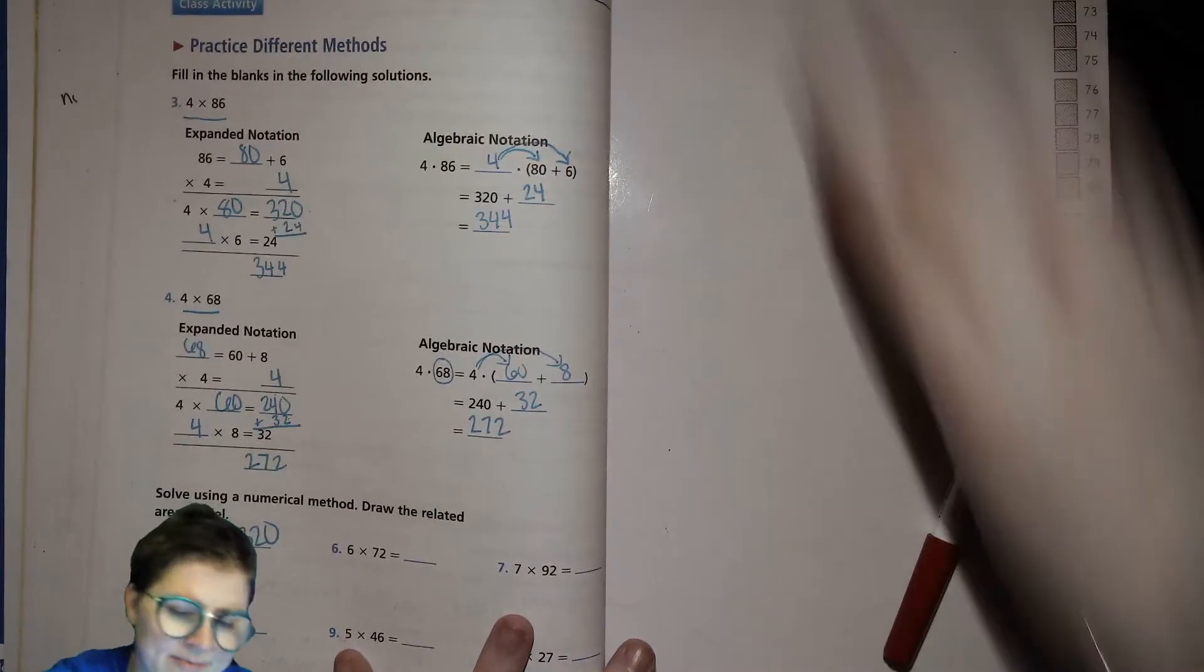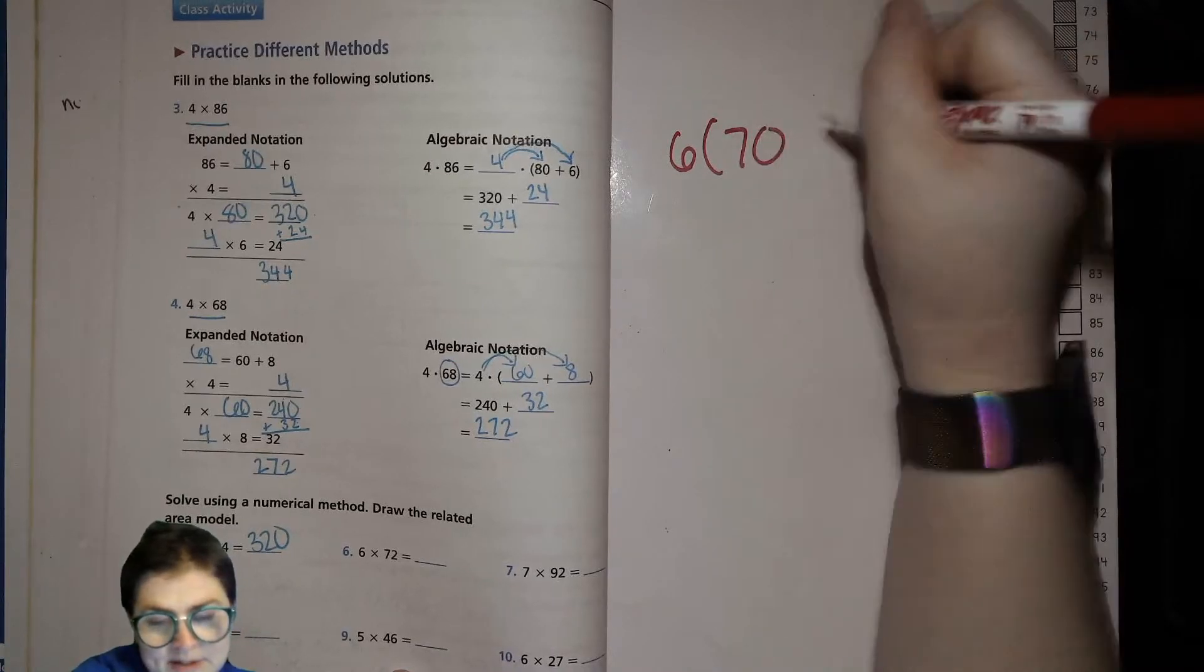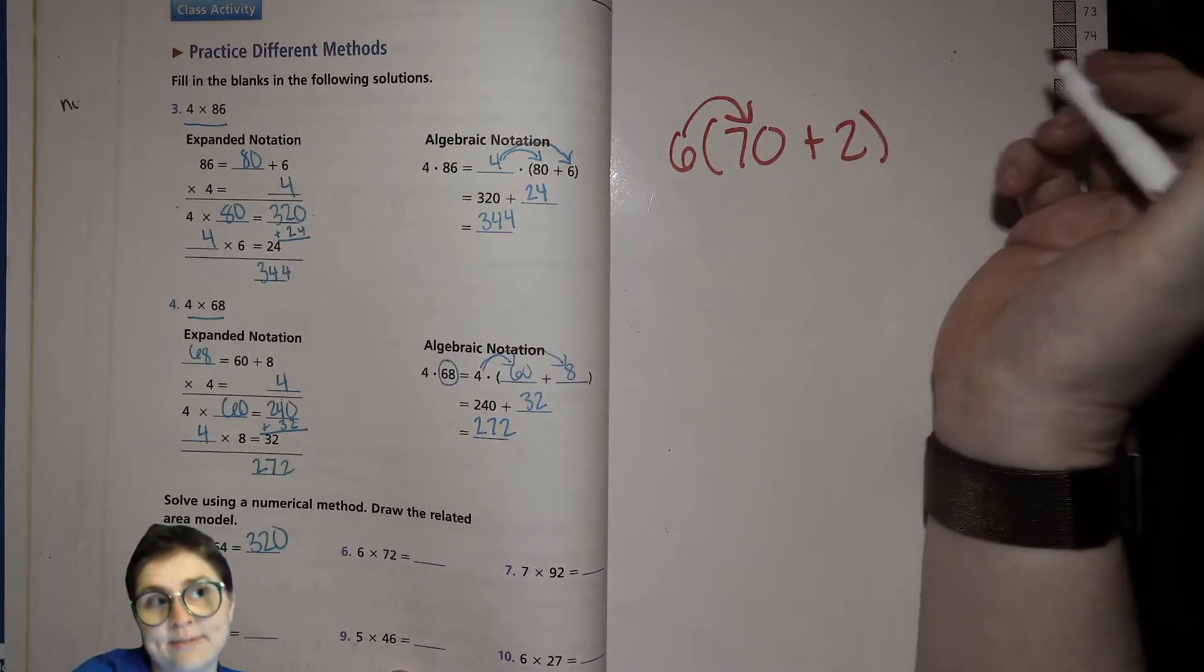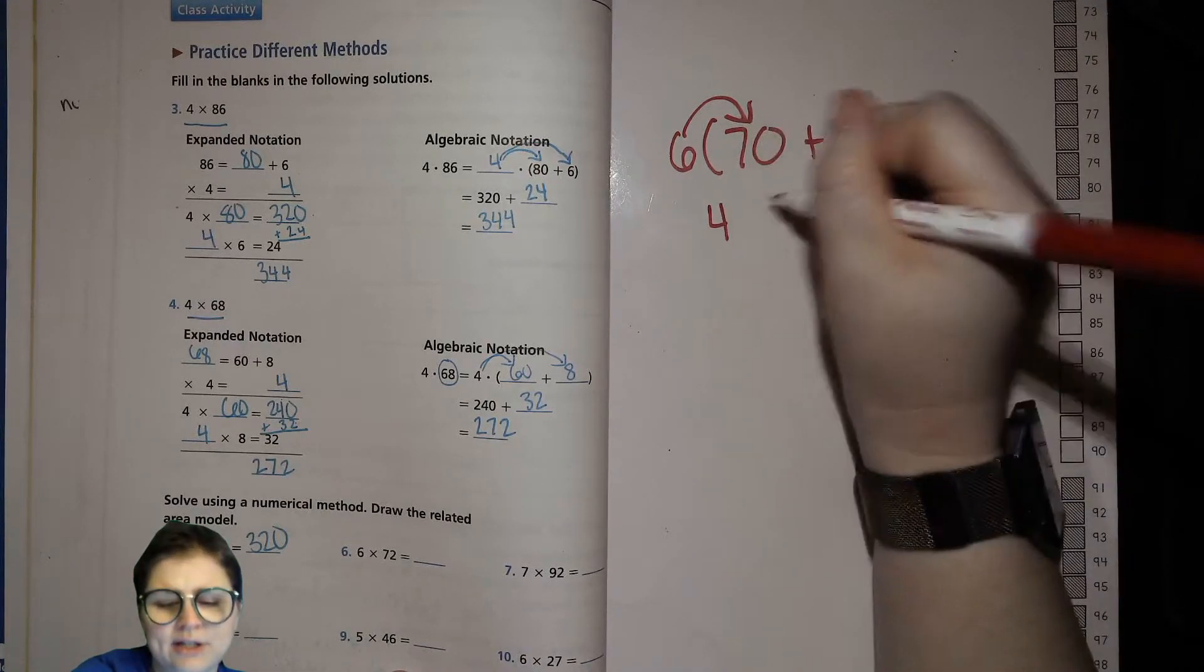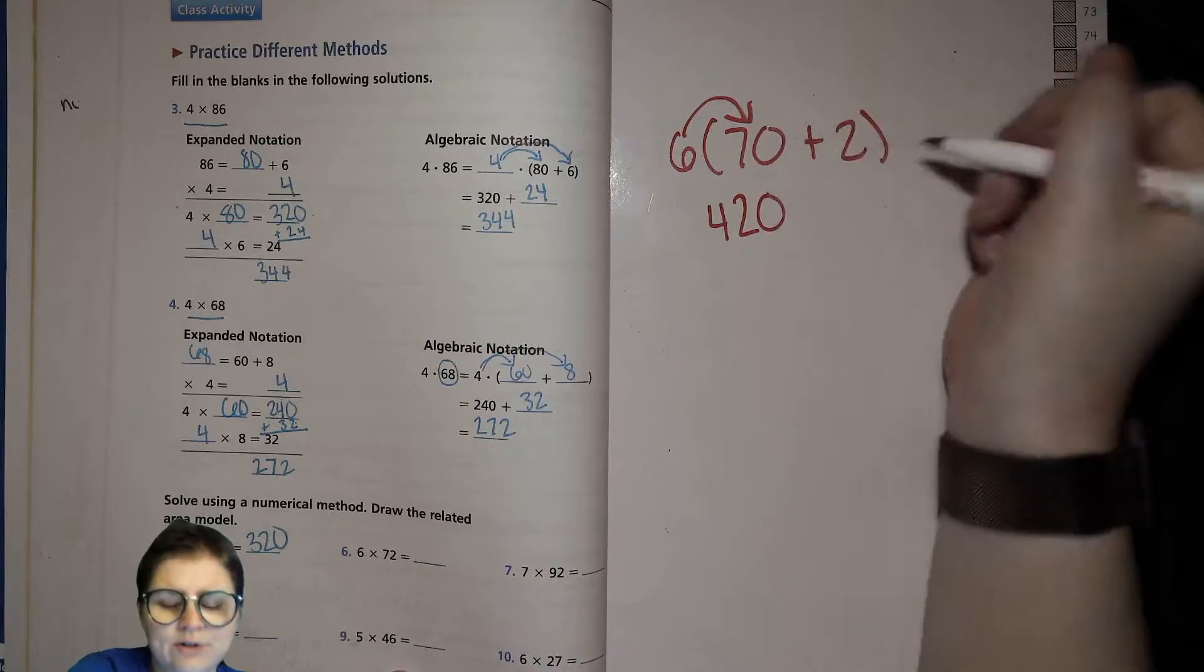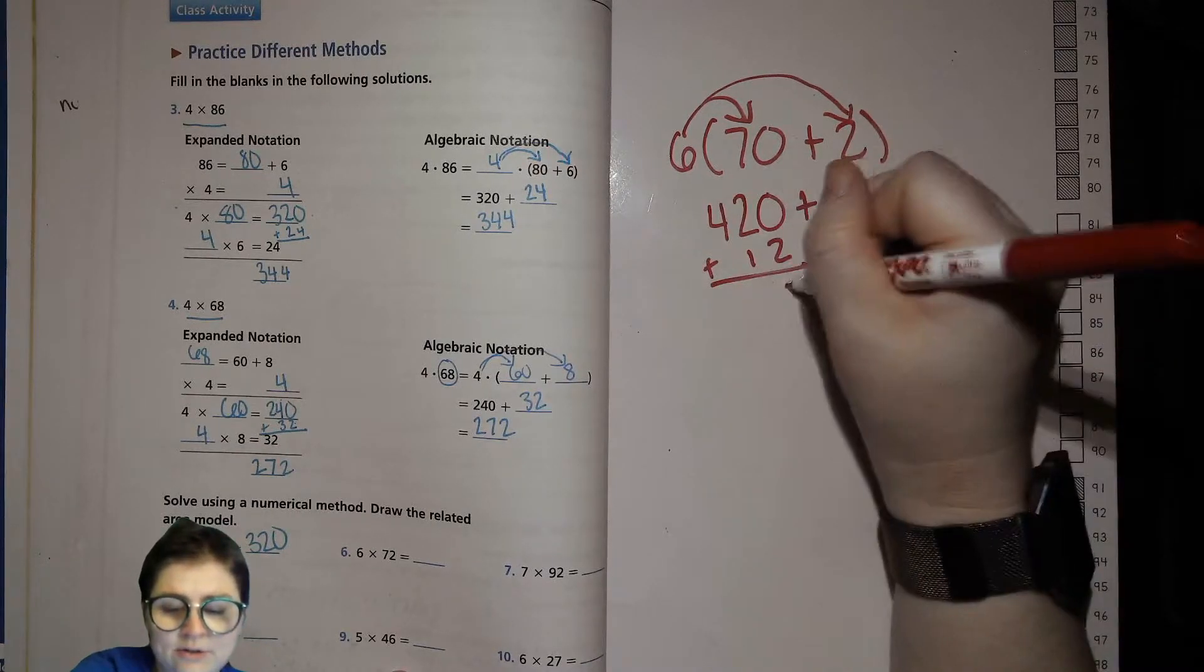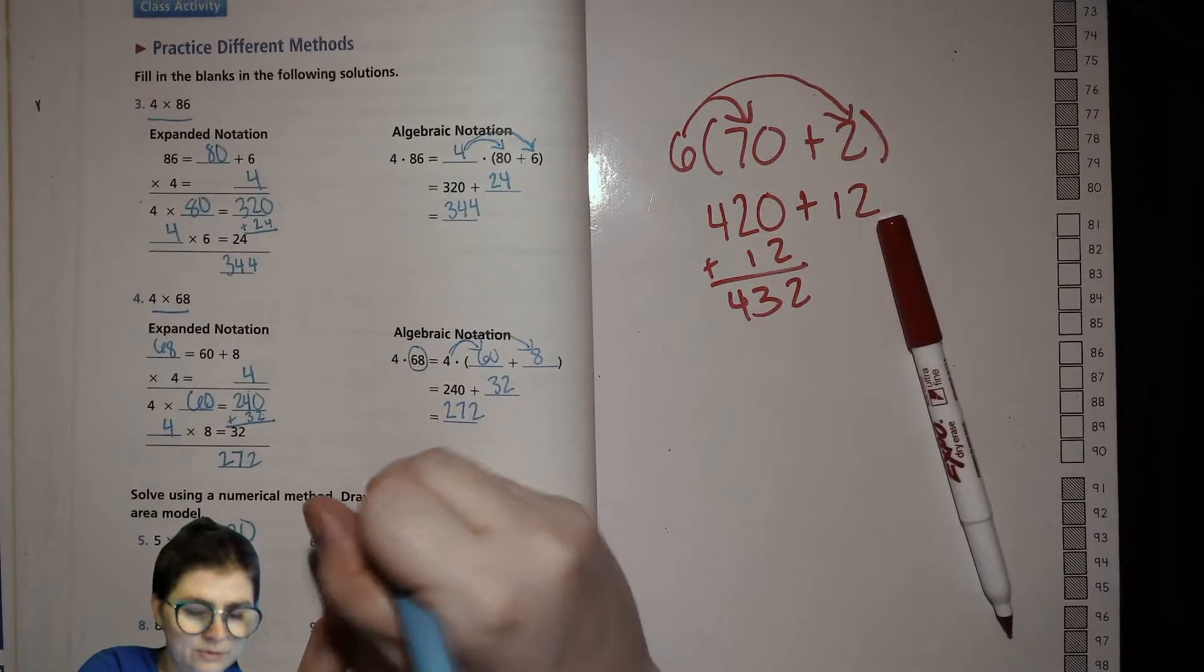Now for this one, I'll do 6 times 70 plus 2. So 6 times 70, 6 times 7. This one was hard for me when I was a kid. 6 times 10. Add that to the 420. 2, 3, 4. 432.